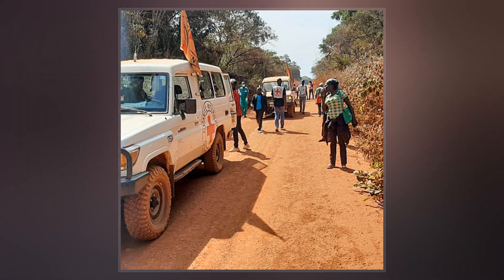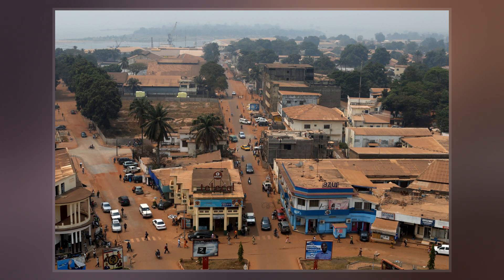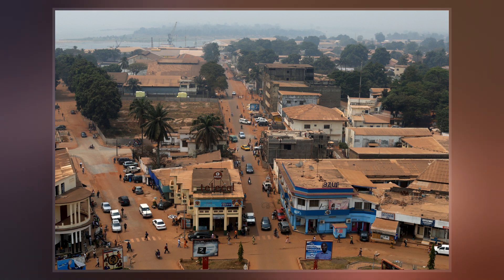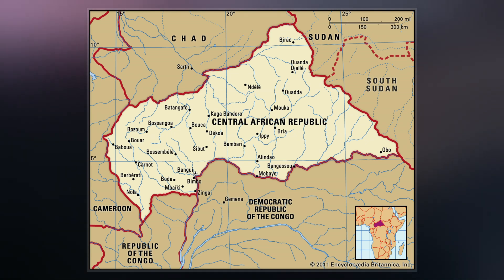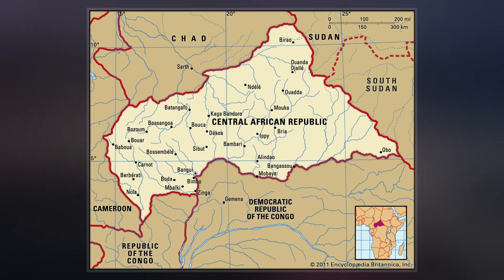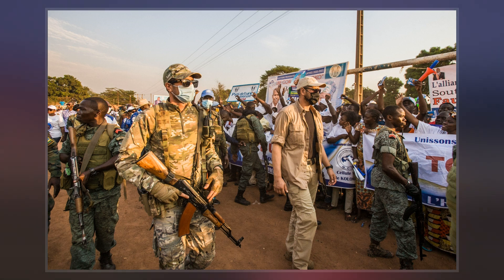Most of the Central African Republic consists of Sudano-Guinean savannas, but the country also includes a Sahelo-Sudanian zone in the north and an equatorial forest zone in the south. Two-thirds of the country is within the Yubangi River basin, while the remaining third lies in the basin of the Chari, which flows into Lake Chad.